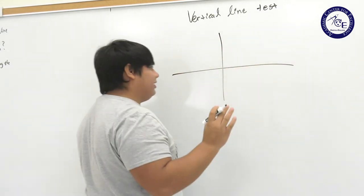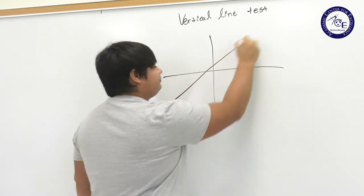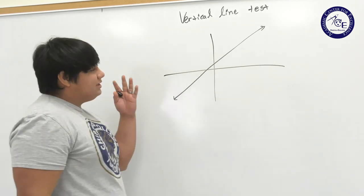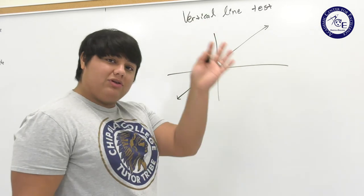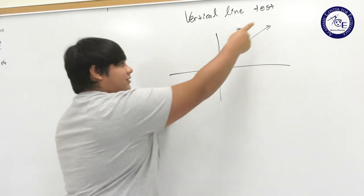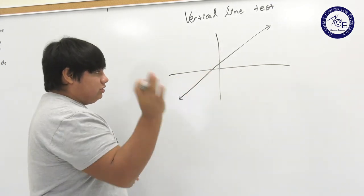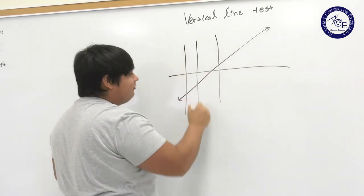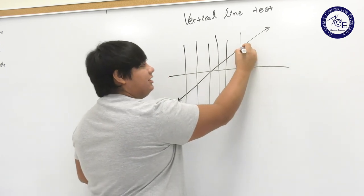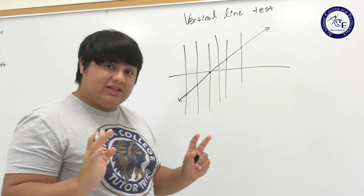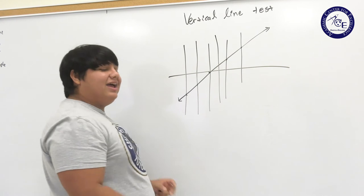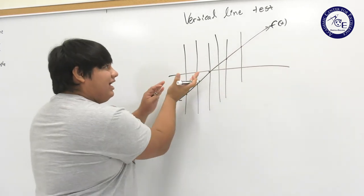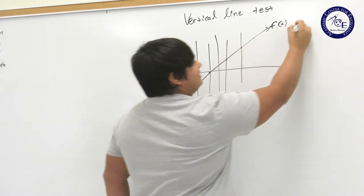We'll start with a basic example - the line we just did. The vertical line test tells us that if we can draw multiple vertical lines and they only ever cross the function once, then it is a function. So with this line, I can draw multiple vertical lines and you notice it only ever crosses once - here, here, here. A vertical line is never going to cross this function more than once. We'll call this f of x, and since it's never crossed more than once, f of x is a function.